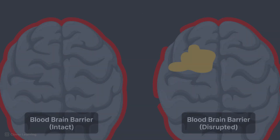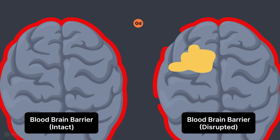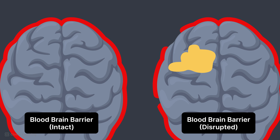It is important to use gadolinium contrast for tumors of any type. Gadolinium contrast cannot cross the blood-brain barrier if intact. Since extraaxial tumors are outside the blood-brain barrier, they will always quickly enhance. Intraaxial tumors, like a glioblastoma, disrupt the blood-brain barrier. This disruption allows the gadolinium to enter the brain tissue and ultimately the tumor.